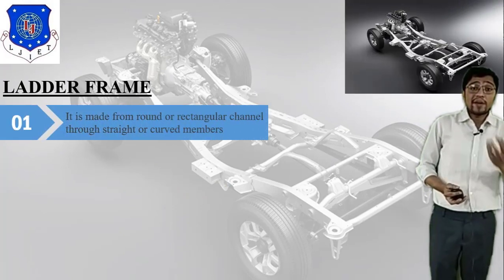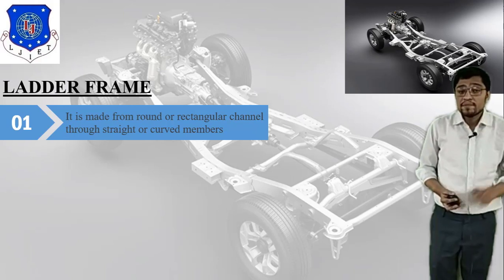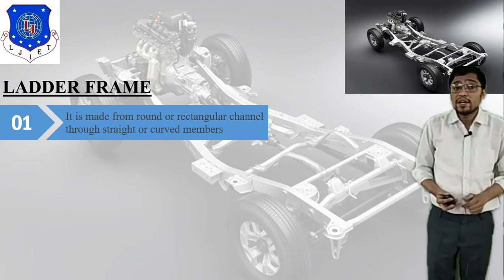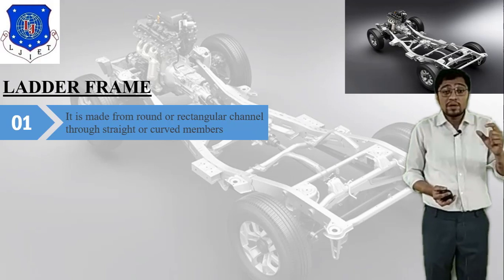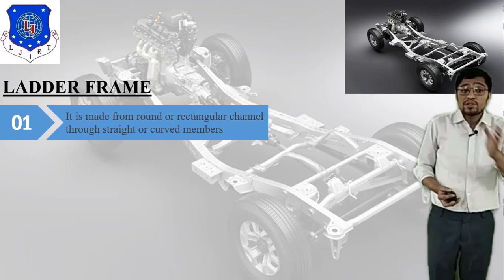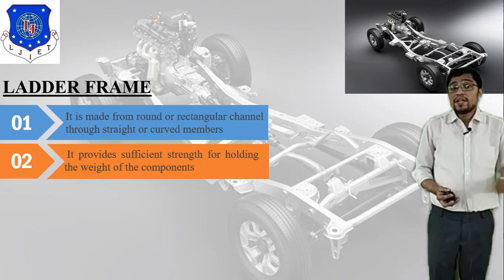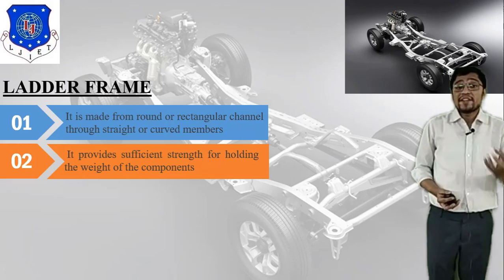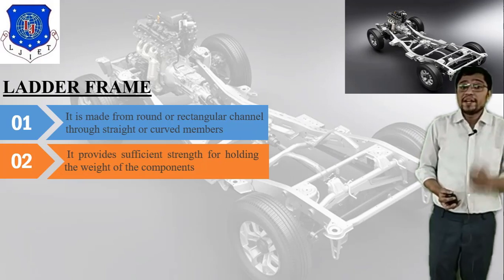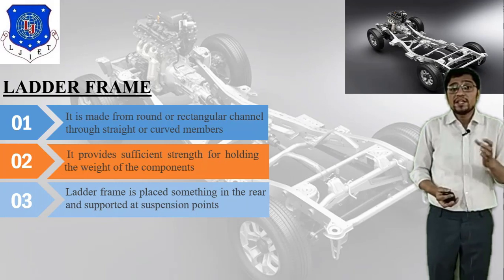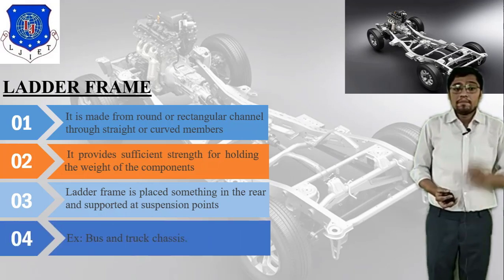The first type is the ladder frame chassis, which is useful in buses and trucks. As you can see in the image, there is a frame to which the engine, different mechanical components, and tires are connected. The ladder frame is made from round or rectangular channel through straight or curved members, and it provides sufficient strength for holding the weight of components due to the heavy-duty nature of buses and trucks.